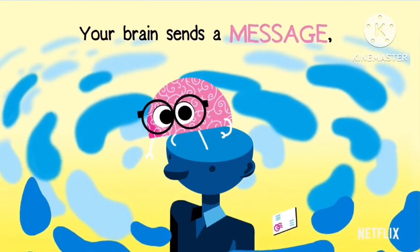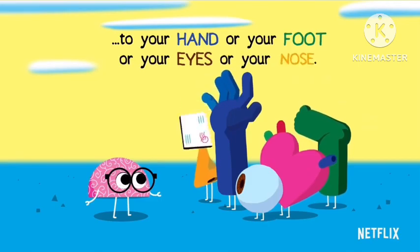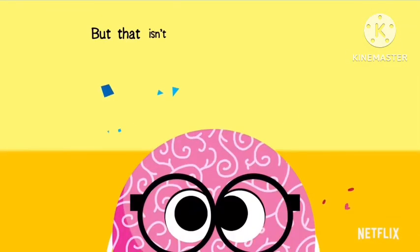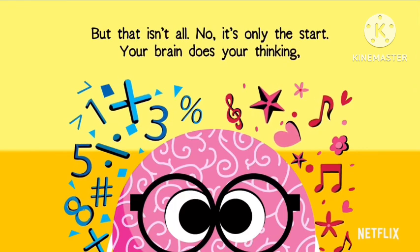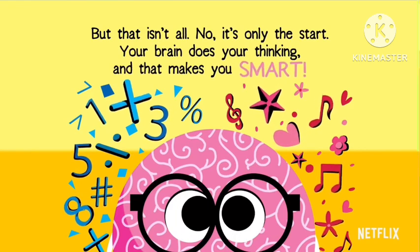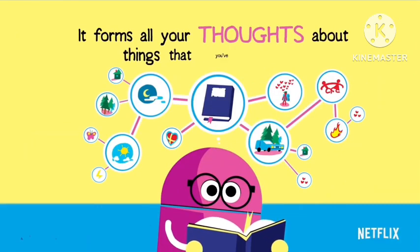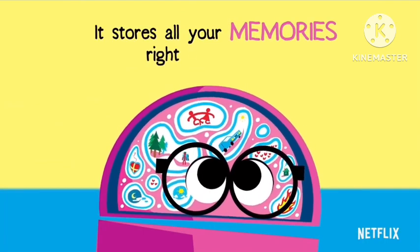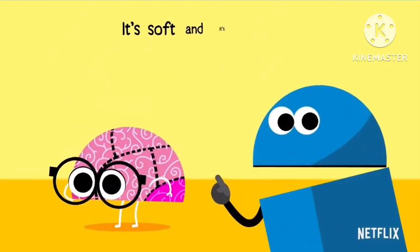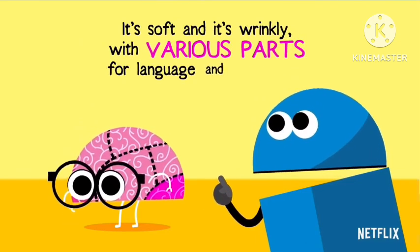Your brain sends a message and swiftly it goes to your hand or your foot or your eyes or your nose. But that isn't all, no, it's only the start. Your brain does your thinking, and that makes you smart. It forms all your thoughts about things that you've read. It stores all your memories right in your head.